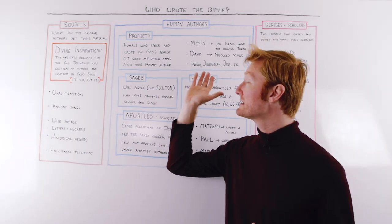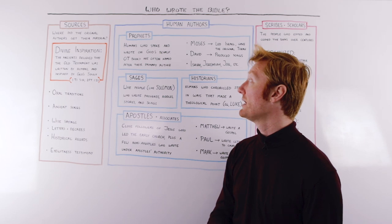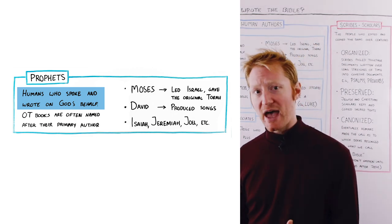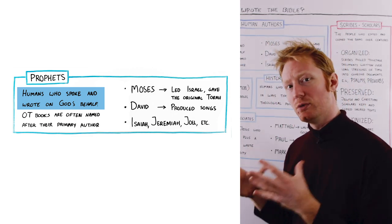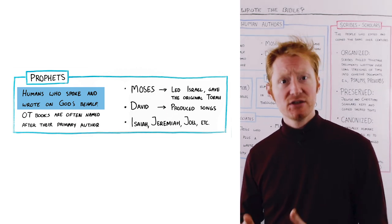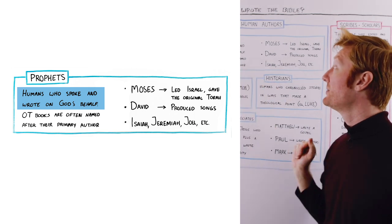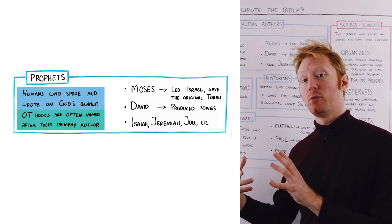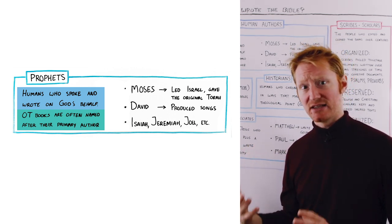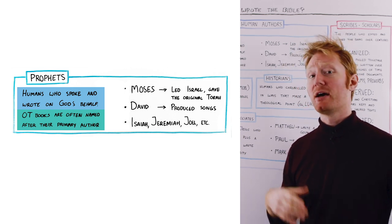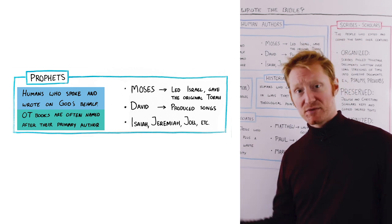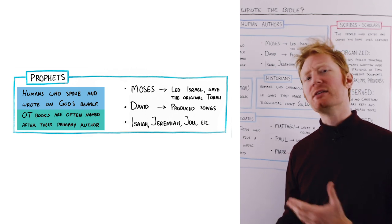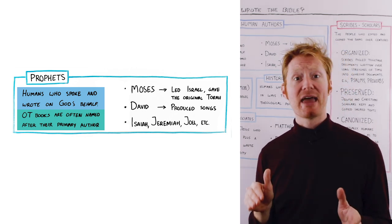When we're looking at contributors, the chief type of contributor to what we call the Bible today are the prophets. And these are humans who spoke and wrote on God's behalf. They were usually calling people to live in obedience or loyalty to Israel's God. The Old Testament books are often named after the prophet that wrote the majority of the text in those books. So when we see the book of Ezekiel, most of the book of Ezekiel was written, we believe, by the prophet Ezekiel. And you see that with most of the books that are toward the end of the Old Testament.